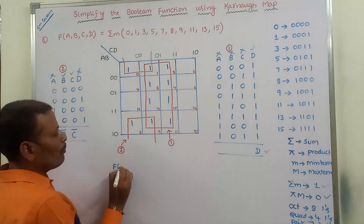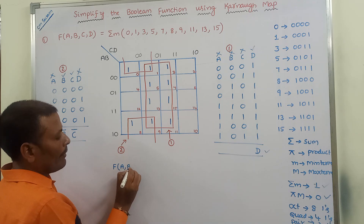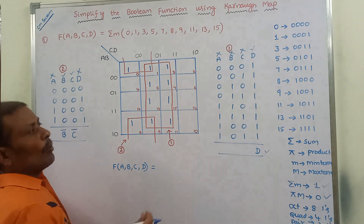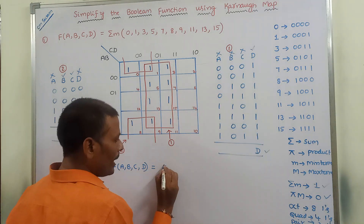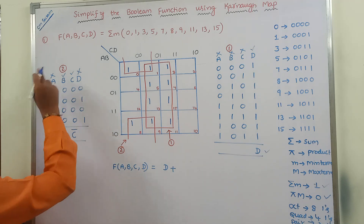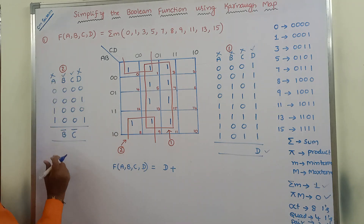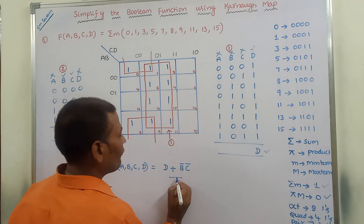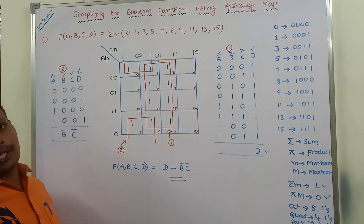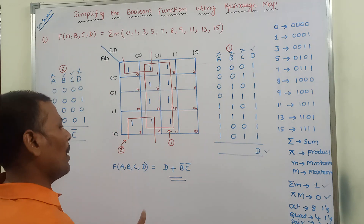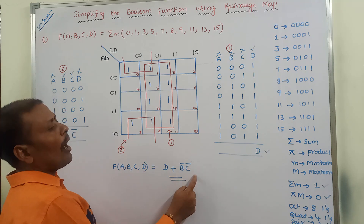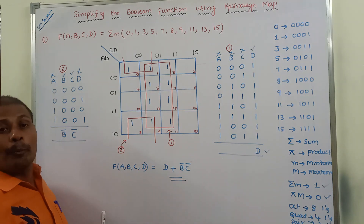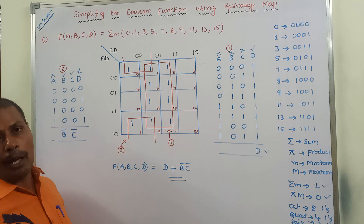So the simplified expression for the quad is B̄C̄. After finding the simplified expressions — one oct gives D, and one quad gives B̄C̄ — the final simplified expression for the given Boolean function using the four-variable Karnaugh map is D + B̄C̄. In this way, we solve any Karnaugh map problem.